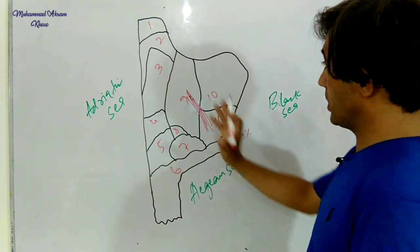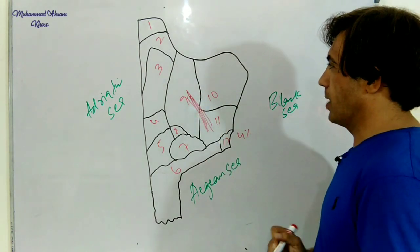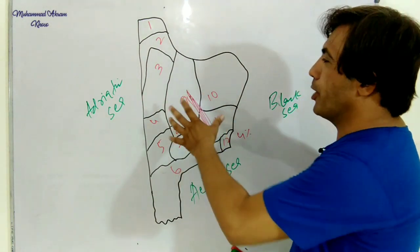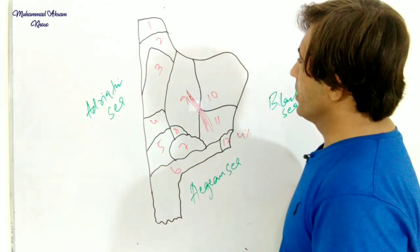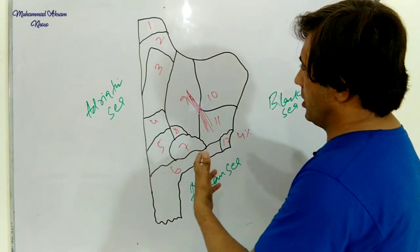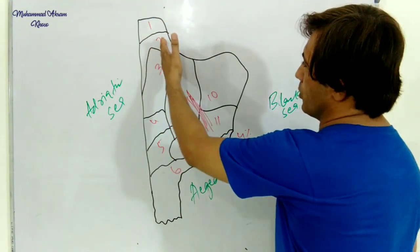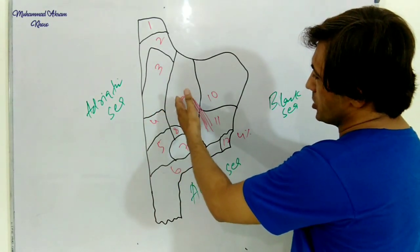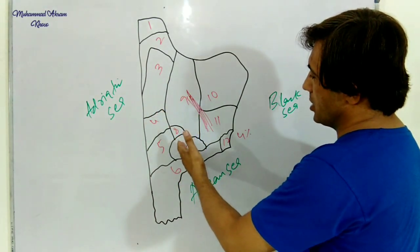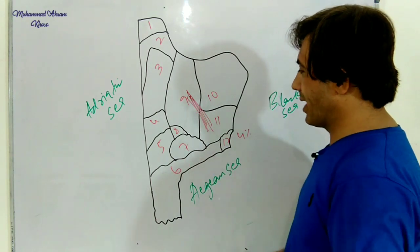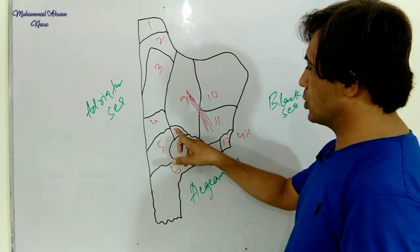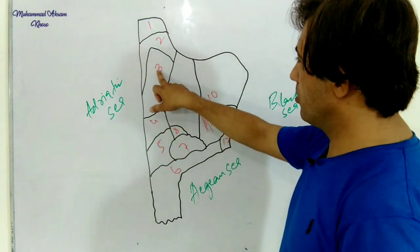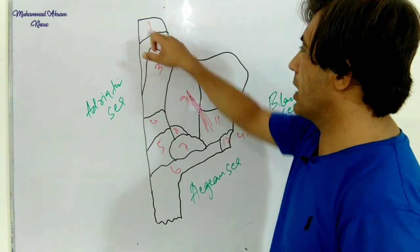In fact, you know former Yugoslavia, we must know about former Yugoslavia. Yugoslavia dismembered, and then Slovenia, Croatia, Bosnia and Herzegovina, Montenegro, and Serbia were created from the dismemberment of former Yugoslavia.